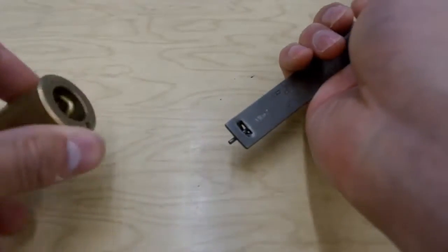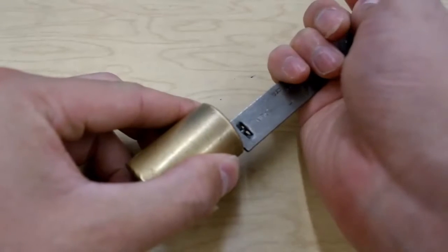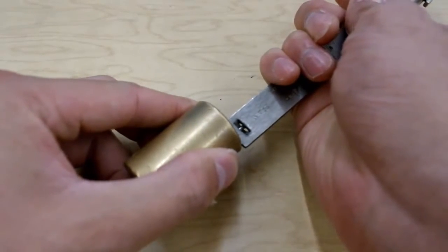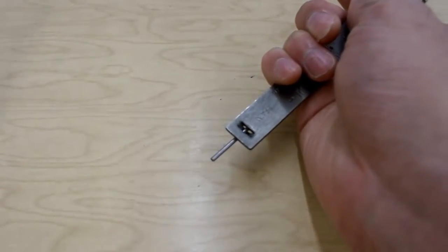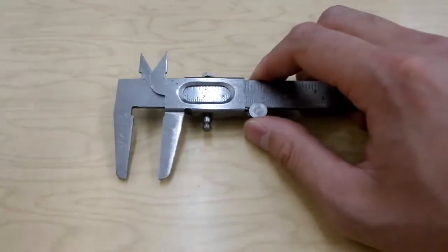And then this part back here, it's for measuring the depth of the hole. Put it right there, hit the bottom, and then we know how deep the hole is. Most of the time though, we will be using this part for regular lengths.